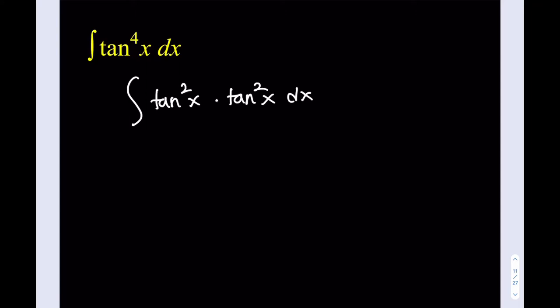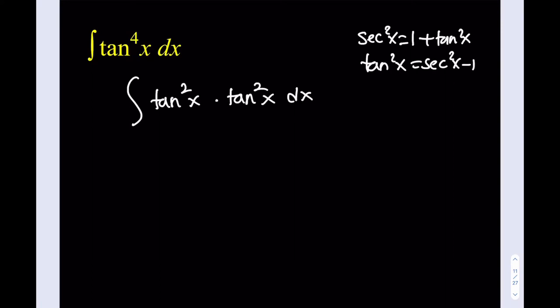Since secant squared equals 1 plus tangent squared, tangent squared can always be written as secant squared x minus 1. I'll replace one of the tangent squared factors with secant squared x minus 1. This is going to do wonders.